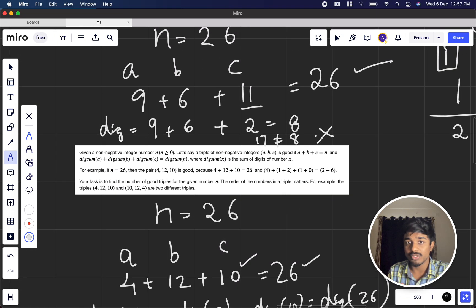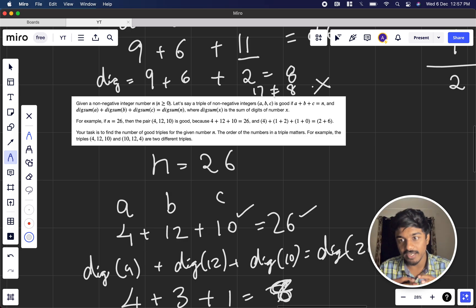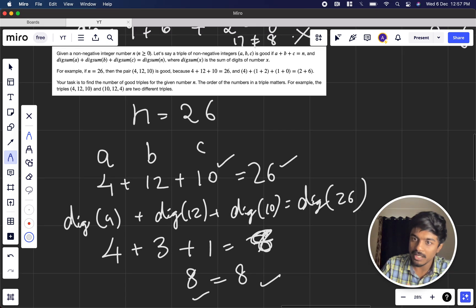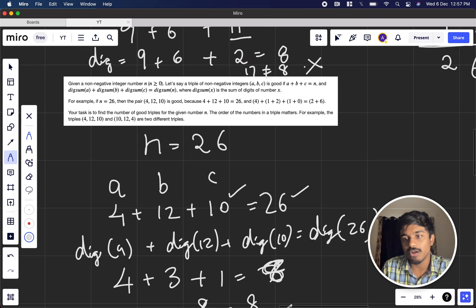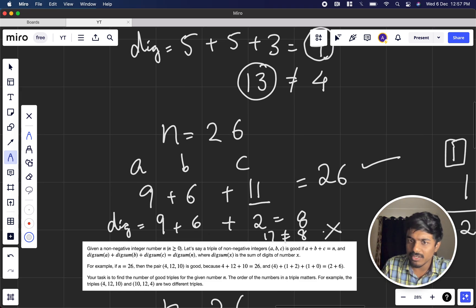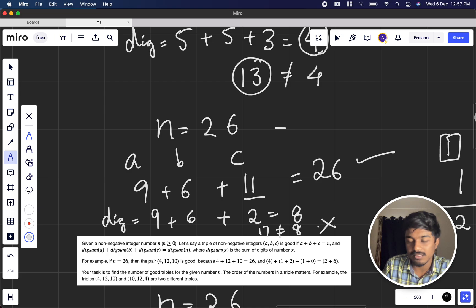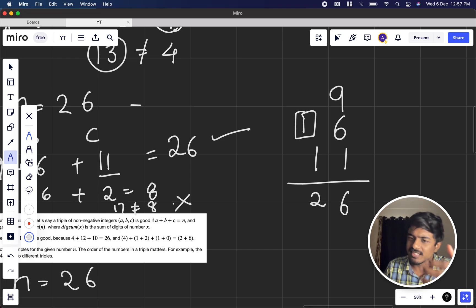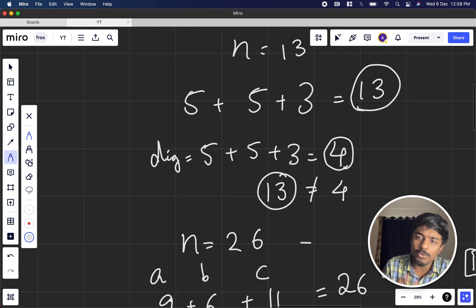Again, what did we do? We understood that to form a number, we need three numbers according to the question. Then we have to reduce it to the digit sum, and the LHS and RHS should be the same. So for 26 we found out it's working. But we tried another combination like 9, 6, 11. From that we understood this is not working since LHS is 17, not 8. We saw that some extra 1 is coming. Since extra 1 is coming, it might be the issue.